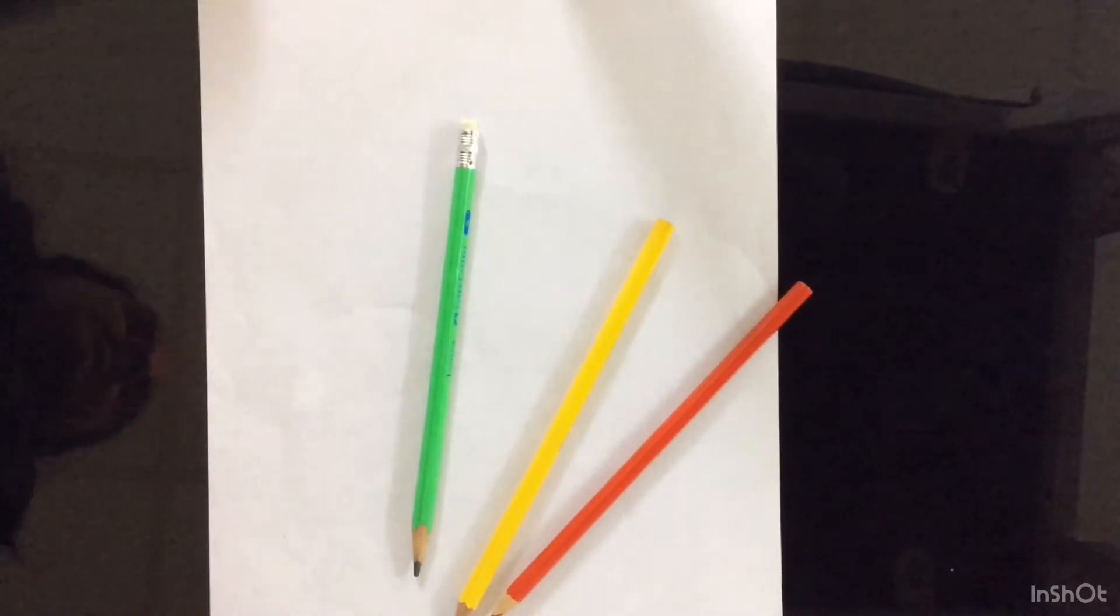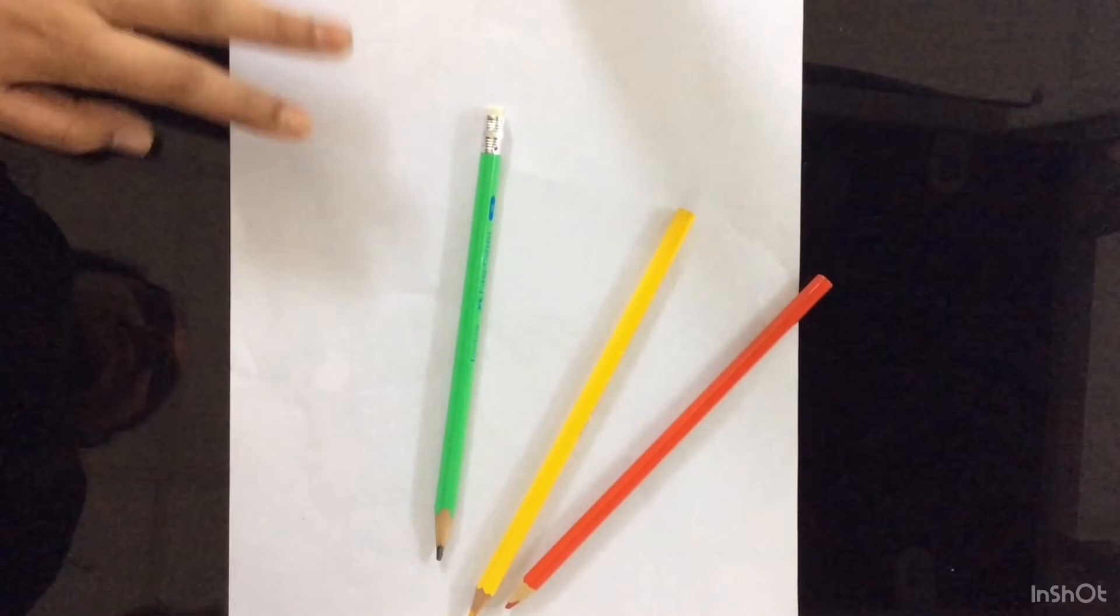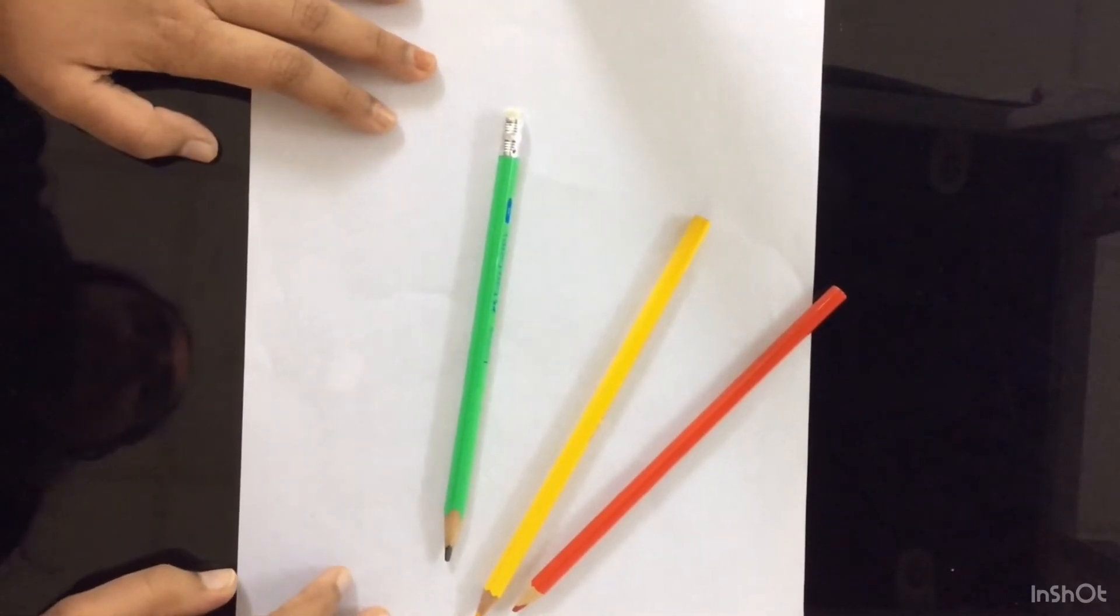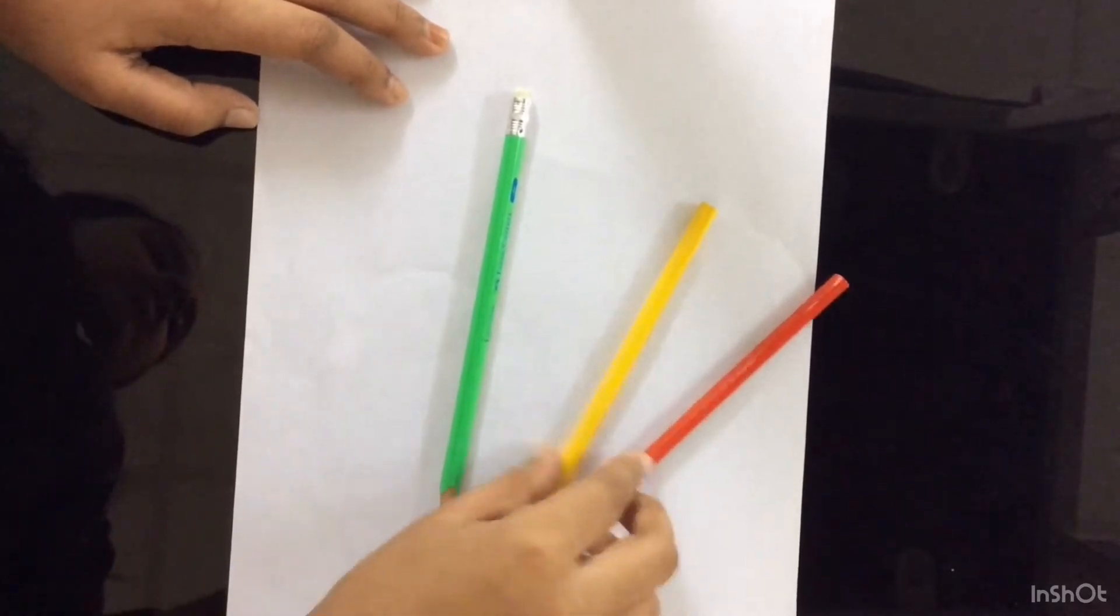I'm going to draw a Christmas hat and for this I'm going to be drawing on an A4 sheet. I'm going to use color pencils, I'm using red and yellow. So let's get started. First we need to draw the hat, so I will show you how to draw a hat.